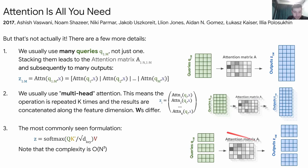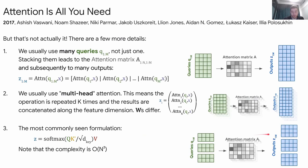Taking all of this together, it can be written concisely: query times keys transposed (both matrices), divided by a normalizing factor (a scaling constant, not learned), then softmax to get the attention matrix, then multiply by the values matrix to produce the outputs. This is the full attention mechanism.